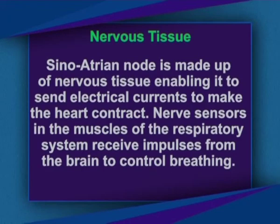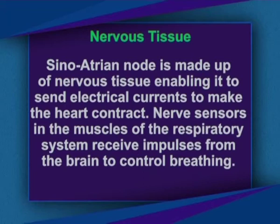Nervous tissue: the sinoatrial node is made up of nervous tissue, enabling it to send electrical currents to make the heart contract. Nerve sensors in the muscles of the respiratory system receive impulses from the brain to control breathing. The brain detects oxygen and carbon dioxide levels in the body, so without this tissue the respiratory system would not know when to speed up or slow down.